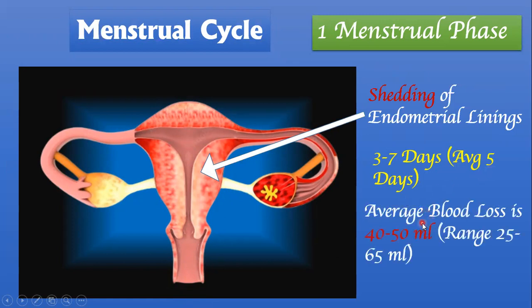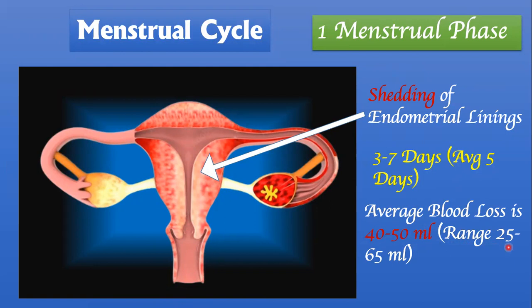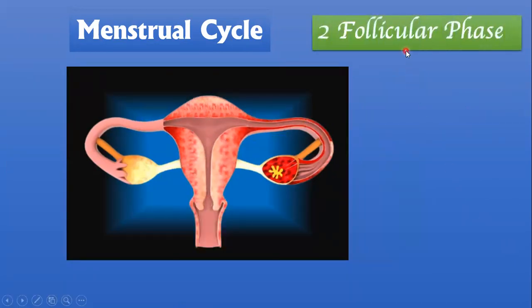The average blood loss during the 5 days of the menstrual phase is nearly around 40 to 50 ml, with a range of 25 to 65 ml.